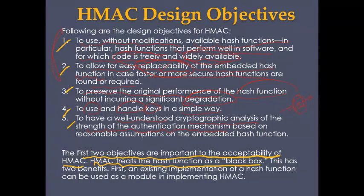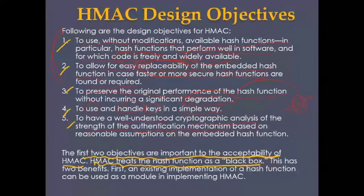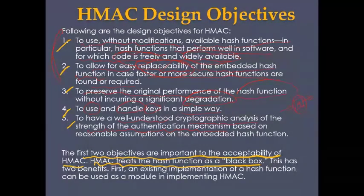The first two objectives are important to the acceptability of HMAC. HMAC treats the hash function as a black box — you input something and get an output, but you cannot see inside the mechanism since it is a mathematical function.